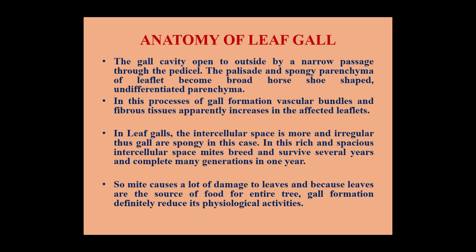Anatomy of Leaf Gall: The leaf gall cavity opens to the outside by a narrow passage through the pedicel. The pellucid and spongy parenchyma of the leaflet become broad, horse-shoe-shaped, and undifferentiated parenchyma cells. In this process of gall formation, vascular bundles and fibrous tissue apparently increase in the affected leaflet. In the leaf gall, the intercellular space is more and irregular. Thus, galls are spongy in this case. In this rich and spacious intercellular space, the mites breed and survive several years, completing many generations in one year.